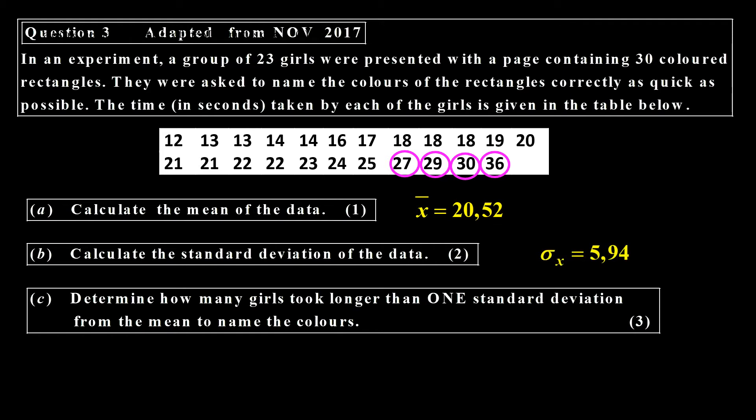The standard deviation is 5.94. And now how many girls took longer, longer than one standard deviation? So we take the mean plus the standard deviation. That gives us 26.46.